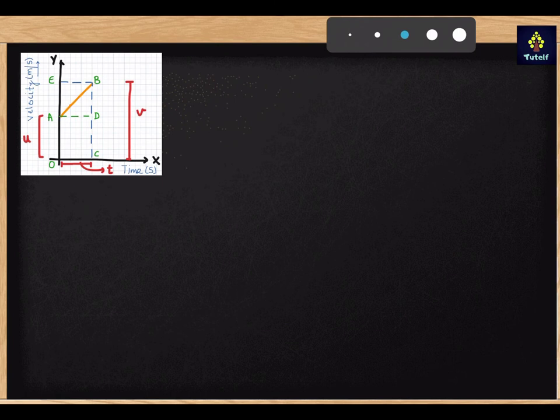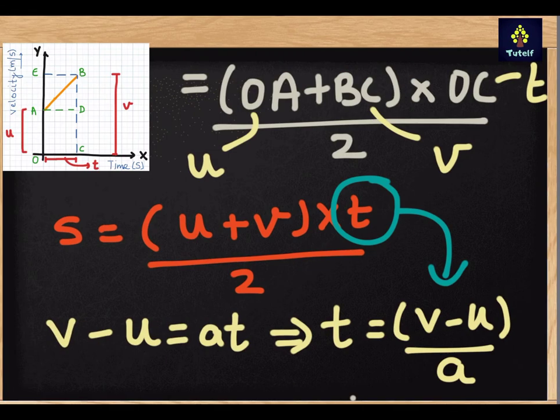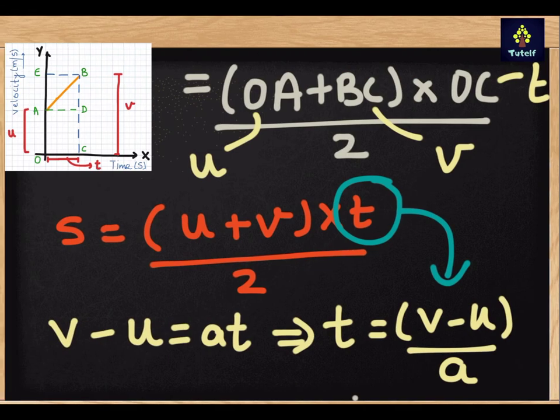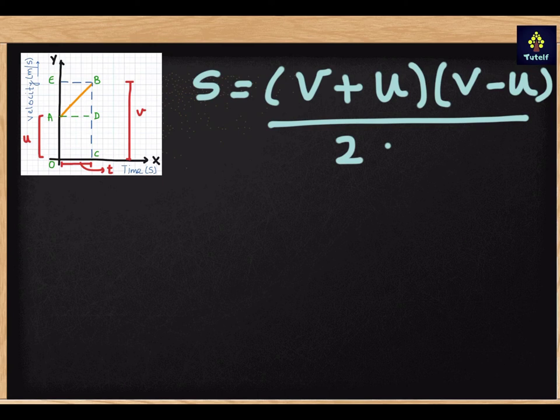And thus what I will get is S is equal to, it's U plus V and V minus U. I can write it as V plus U or U plus V is same. V minus U divided by two A. I just put in the equation this V minus U by A. I just replace my T with this.